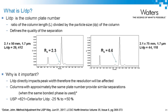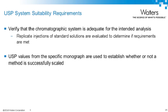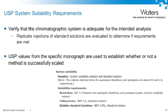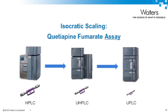In USP monographs, system suitability samples are used to ensure that the LC system is appropriate for the analysis to be run. We will use the USP system suitability requirements listed in the monograph to determine if our scaled method can be successfully used. Specifically, we will look at resolution, tailing factor, and percent RSD for area and retention time. The USP Chapter 621 defines allowable method adjustments that can be made to scale methods without revalidation, as long as the system suitability requirements provided in the monograph are met.